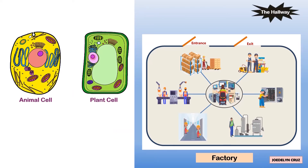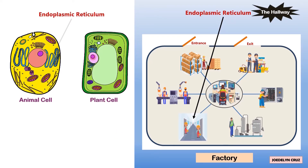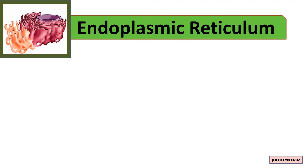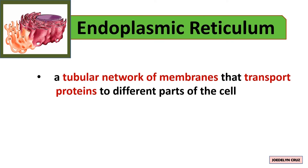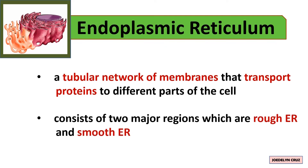The hallway in the factory represents the endoplasmic reticulum. This hallway provides a pathway for the workers to transport products to other rooms, and products are also produced in this hallway. Endoplasmic reticulum is a tubular network of membranes that transports proteins to different parts of the cell. It consists of two major regions: rough endoplasmic reticulum and smooth endoplasmic reticulum.